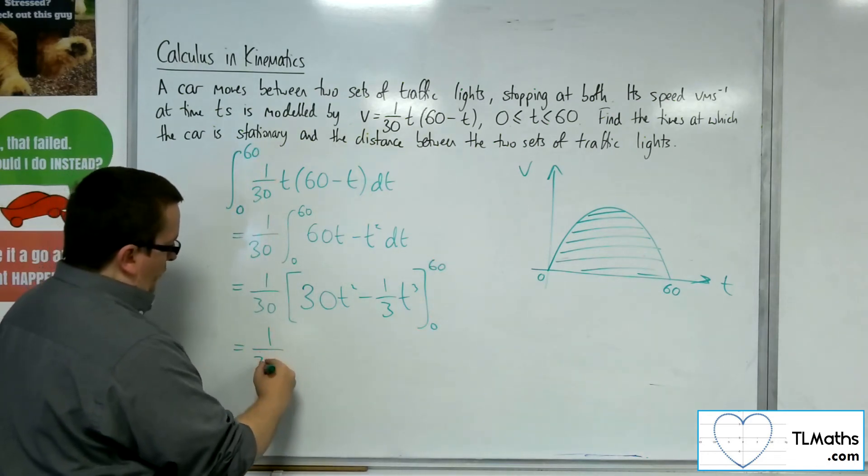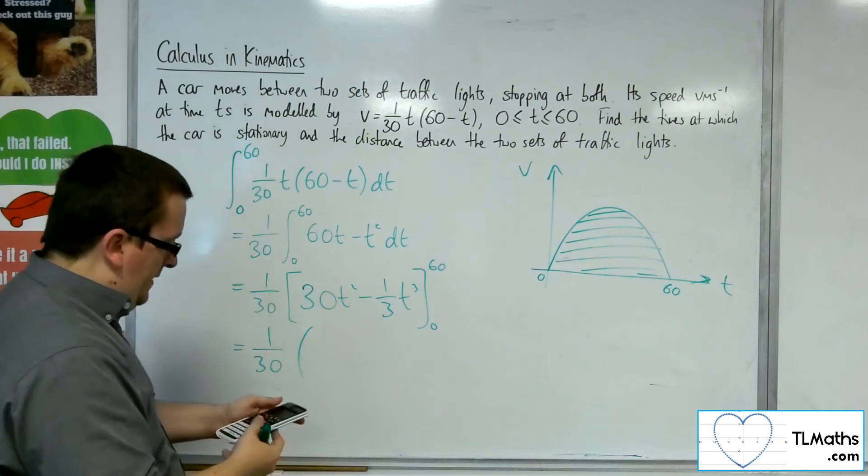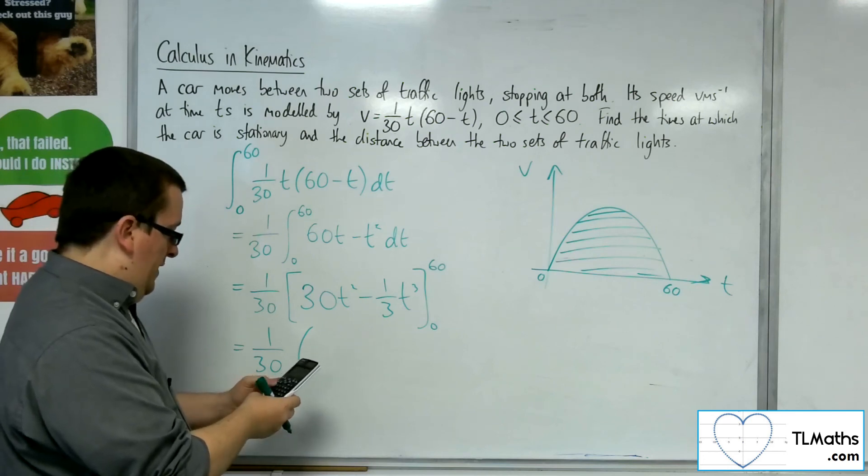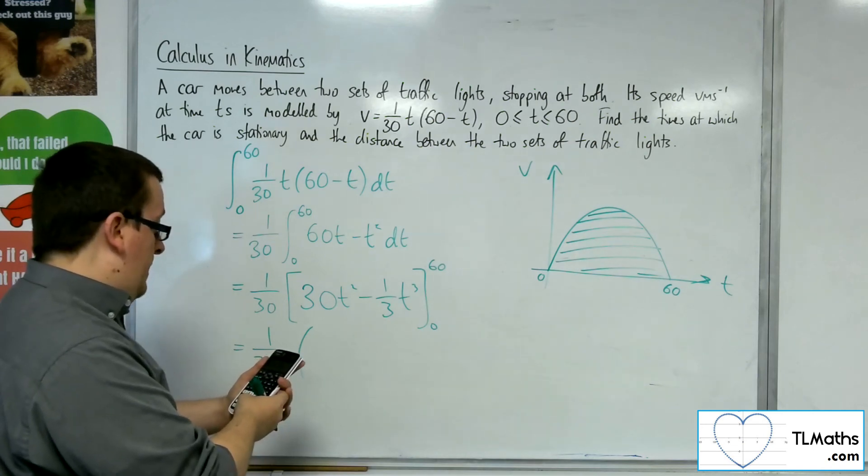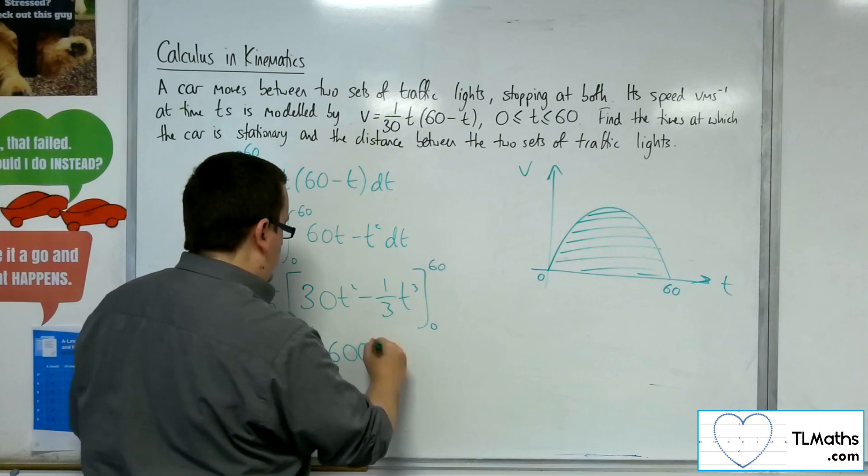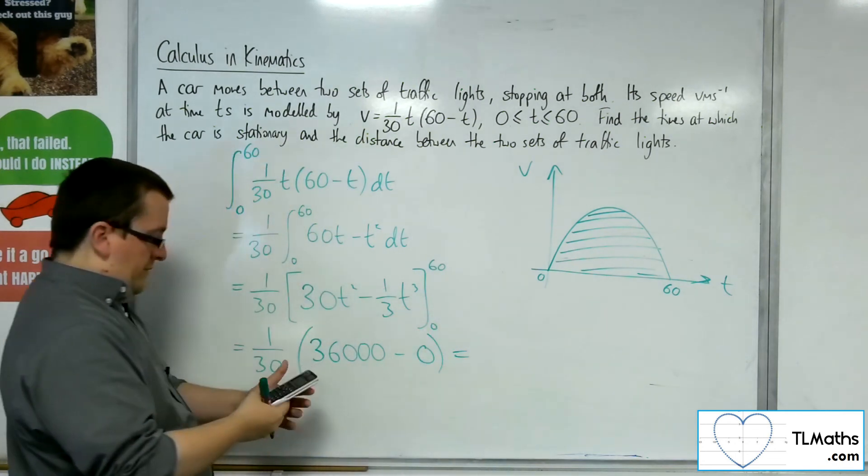And then I want to evaluate this. So I want to substitute 60 into this. So we've got 30 times 60 squared, take away 1 third of 60 to the power 3. So that gets us 36,000. Substitute in 0, I get 0.